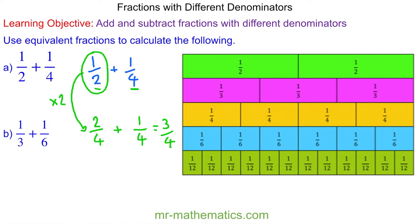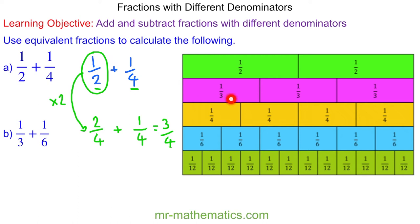And you can see how this works. We have one half here, which is the same as two quarters. And then we add one more quarter, and we do get a total of three quarters.